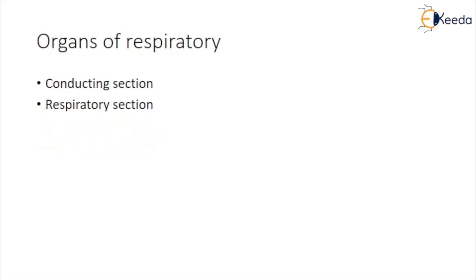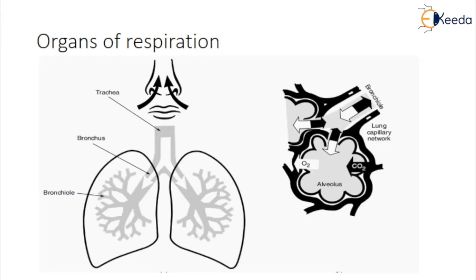The respiratory section includes respiratory bronchioles, alveolar ducts, and alveolar sacs. These contain thin walls and permit gas exchange to the blood capillaries. The lungs consist of two cone-shaped spongy organs that contain the alveoli — air sacs that trap air for gas exchange with the blood. The lungs are covered by a smooth, glistening membrane called the pleura.